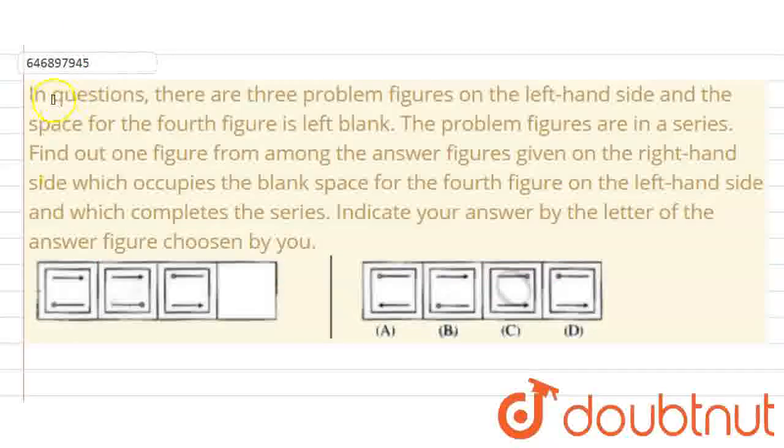Hello everyone, let's start our question. Our question is: in question there are three problem figures on the left hand side and the space for the fourth figure is left blank. The problem figures are in a series. Find out one figure from among the answer figures given on the right hand side which occupies the blank space for the fourth figure on the left hand side and which completes the series. Indicate your answer by the letter of the answer figure chosen by you.